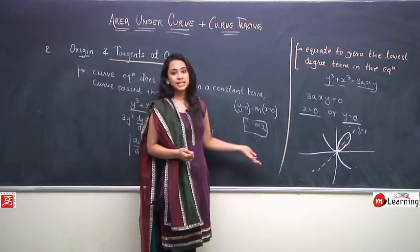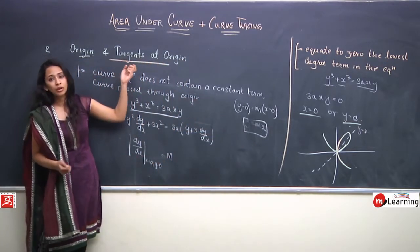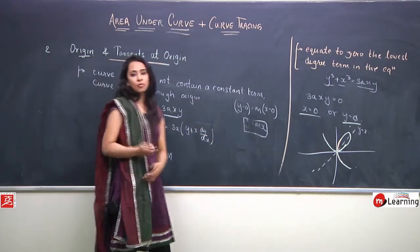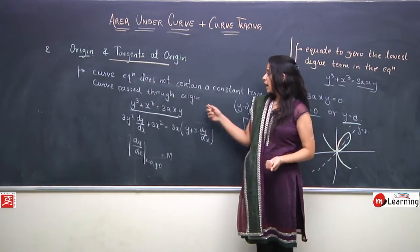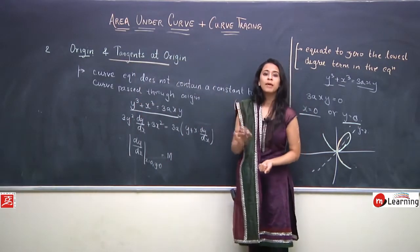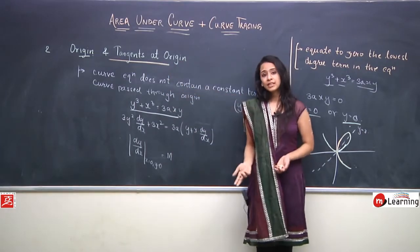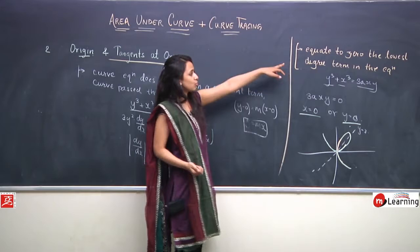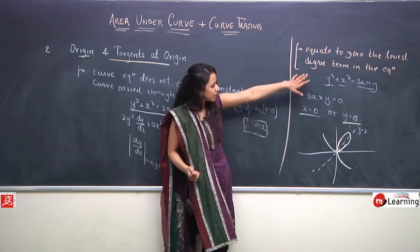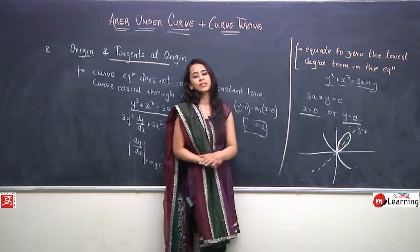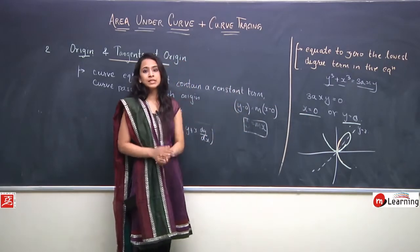So everyone can now find tangents at origin and determine whether a curve passes through origin. To check if a curve passes through origin: either substitute (0,0) in the equation, or check that there is no constant term. To find the tangent at origin: equate the lowest degree term to 0.